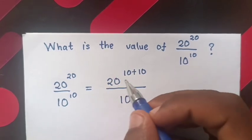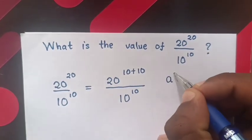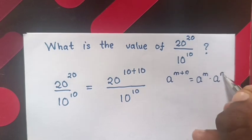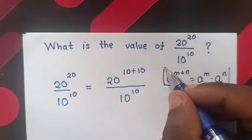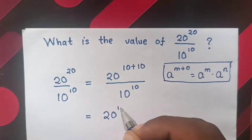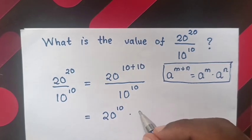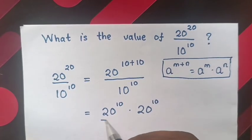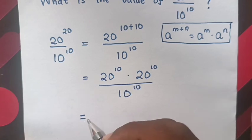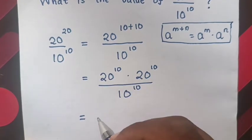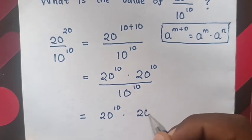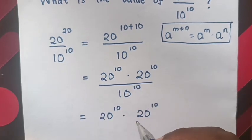Here, 20 power of 10 plus 10 — we apply the rule that a power of m plus n is equal to a power of m times a power of n. So, in the numerator there will be multiplication of exponents, so it will be 20 power 10 times 20 power 10, over 10 power 10.